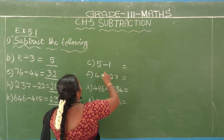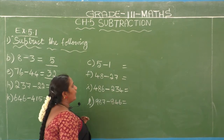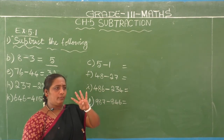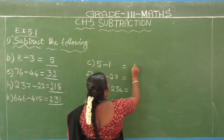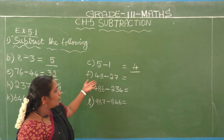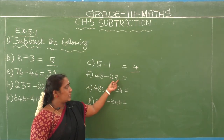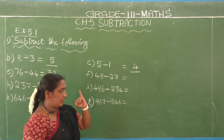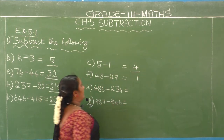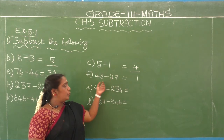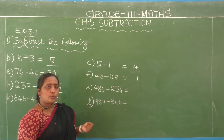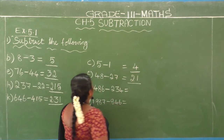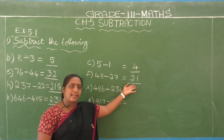C1: 5 minus 1. Second number is 1, first number is 5. 1 after 2, 3, 4, 5. Difference is 4. Next, F: 48 minus 27 — two-digit by two-digit. Ones place: second number is 7, first number is 8. 7 after 8. Answer is 1. Tens place: second number is 2, first number is 4. 2 after 3, 4. Answer is 2. So 48 minus 27 equals 21.